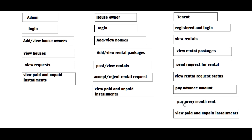After that, the tenant can pay the every-month rent to the house owner. The tenant can view the paid and unpaid installments. The house owner and admin can also view the paid and unpaid installments by the tenant.